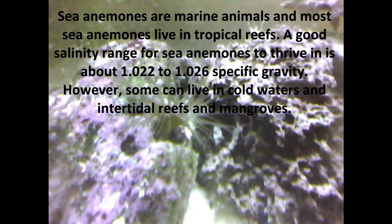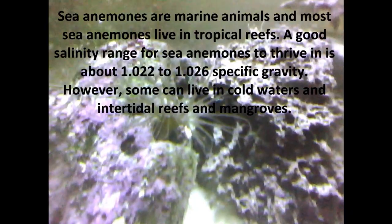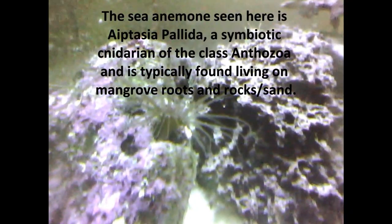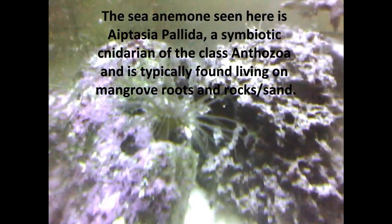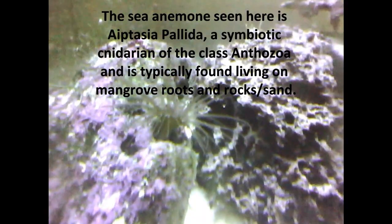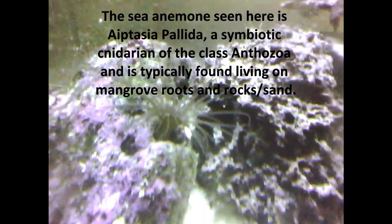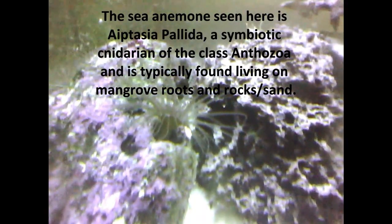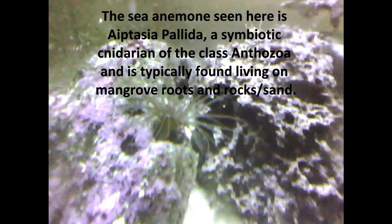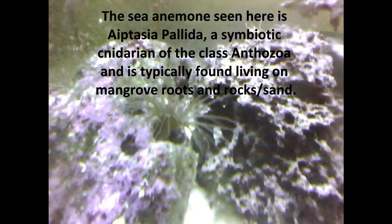However, some can live in cold waters and intertidal reefs and mangroves. The sea anemone seen here is an Exaiptasia pallida, a symbiotic cnidarian of the placozoa, and is typically found living on mangrove roots and rocks or sand.